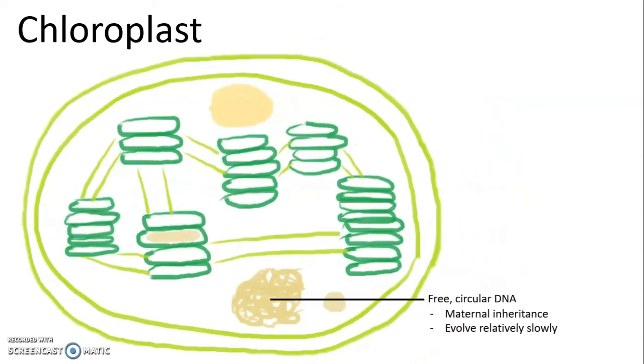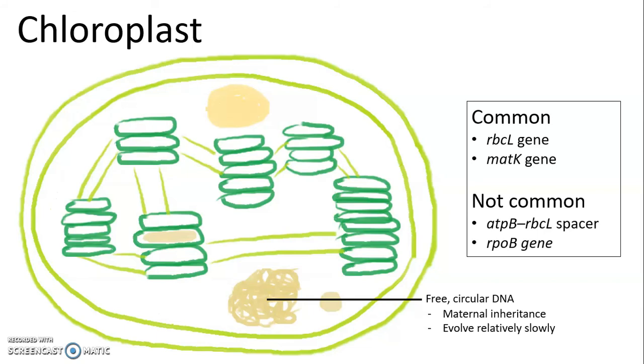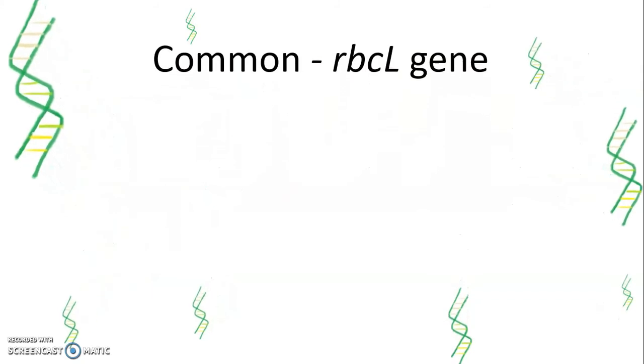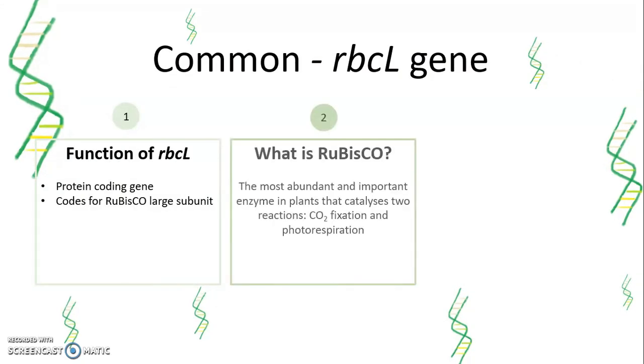Here, we discuss some commonly used genetic markers and some gene regions that are not as popular. First, a commonly used gene is rbcL. It is a protein-coding gene which codes for Rubisco's large subunit. Rubisco is the most abundant and important enzyme in plants that catalyzes two reactions, carbon dioxide fixation and photorespiration.